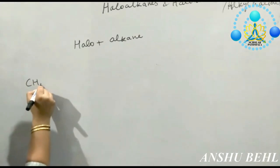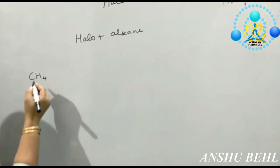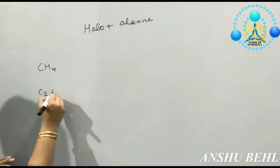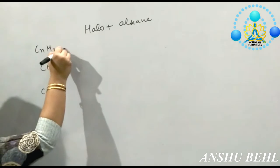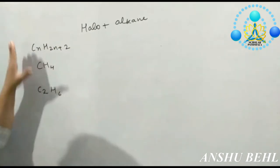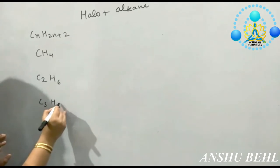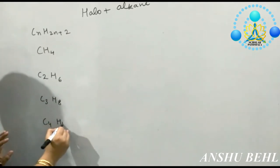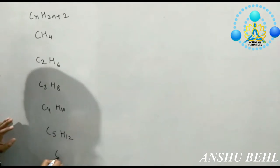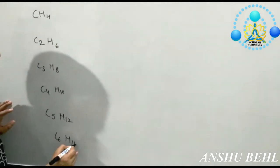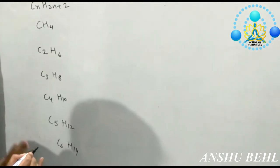Suppose you are having methane group CH4. We will write the alkane series here: CH4, C2H6. That is CnH2n+2. The full alkane series is C3H8, C4H10, C5H12, C6H14. We have methane, ethane, propane, butane, pentane, hexane.